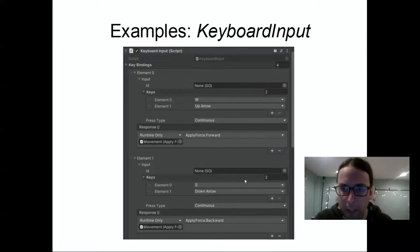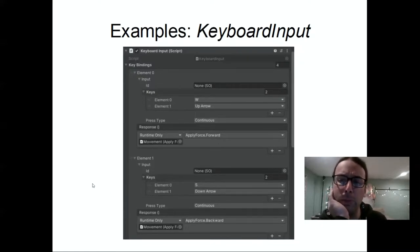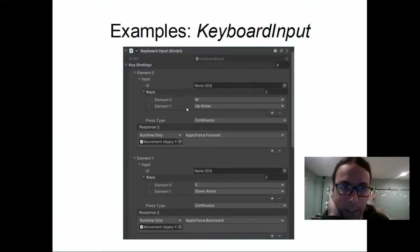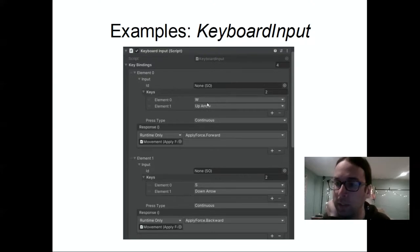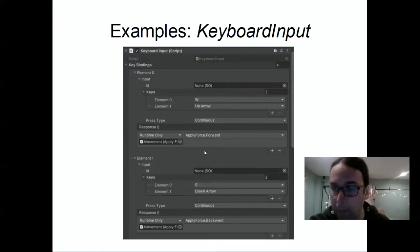Another common script I've been using in almost every project for years is a key input script. It may become obsolete with Unity's new input system, but how it works is you specify a number of bindings, say what keys are associated with each, whether it's press down, press up, or continuous, and then what happens as a result.